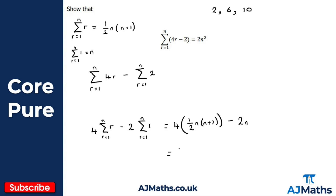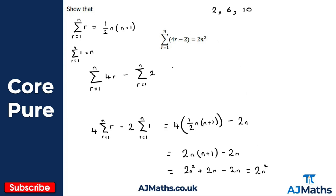Now I simplify. Good algebra skills are essential here — this is where people often trip up, especially with more complex expressions like squares and cubes in the next video. I have 4 times one half n, which gives 2n, so the expression becomes 2n times (n plus 1) minus 2n. Expanding: 2n squared plus 2n minus 2n. The 2n terms cancel, leaving 2n squared — which is exactly what the question asked us to show.